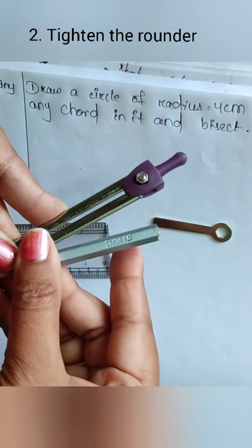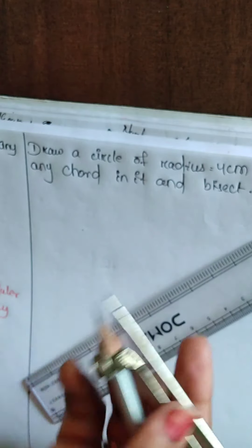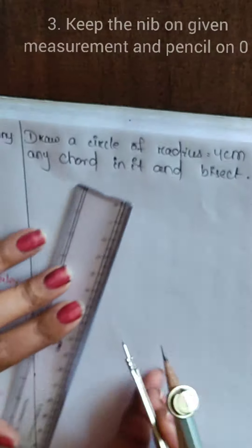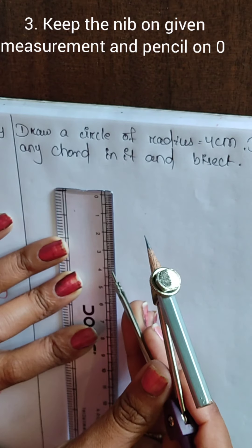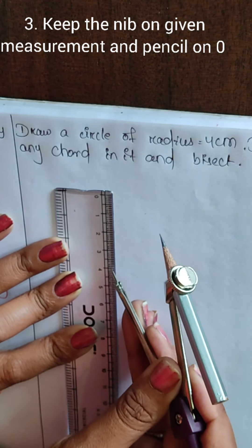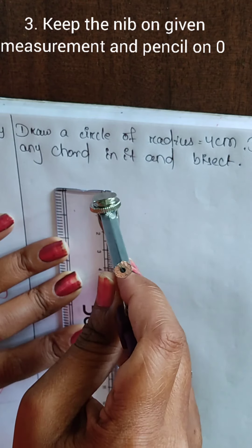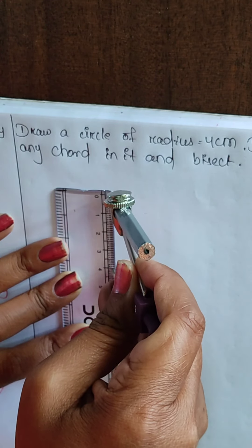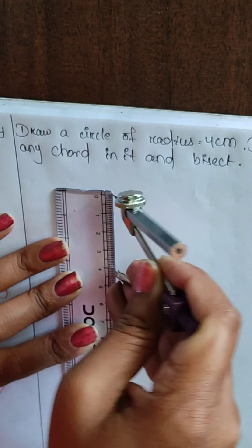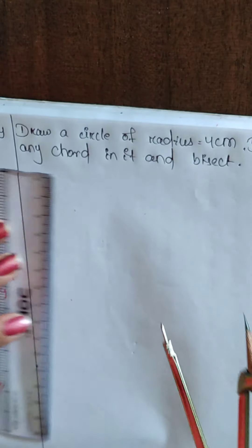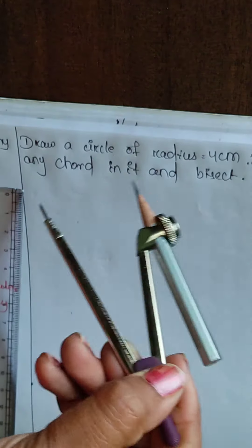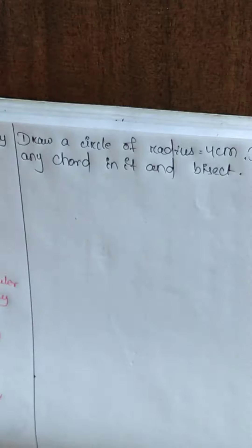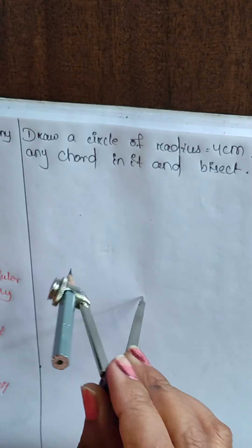So, what you need to do. Number two: tighten the rounder. Next, keep the needle on the given measurement and pencil on zero. Make the adjustment. Then, hold it from the top and draw the circle.